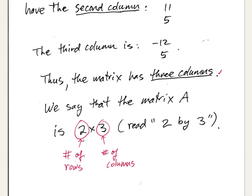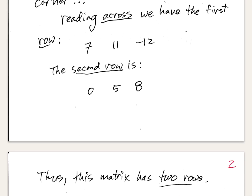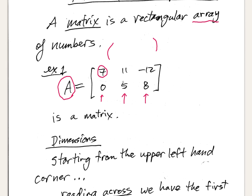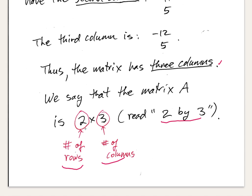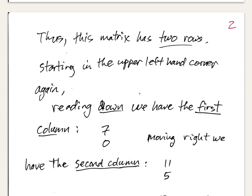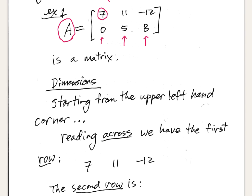When we talk about the dimensions of a matrix, we say it is 2 by 3. The first number in the dimensions is always the number of rows — that's our convention — and the second number is the number of columns. So 2 rows and 3 columns gives us a 2 by 3 matrix, and 2 times 3 equals 6, which is the total number of entries in the matrix.